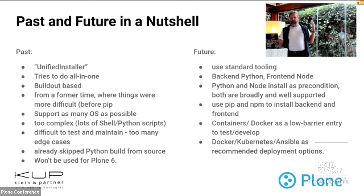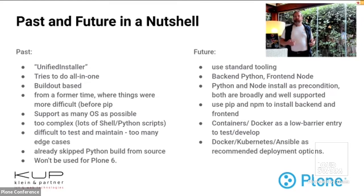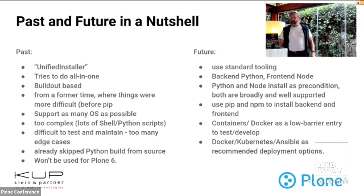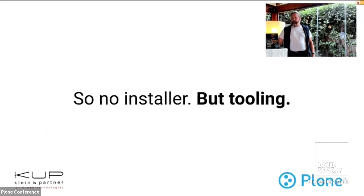We have the tooling for Python and we have the tooling for the Node/npm world. Python and Node can be seen as preconditions — you can install them on every system and both are broadly supported. So we use pip and npm in this environment to install our stuff. On top of that, if you like or want to be efficient, lower the barrier for entry, and make it easier to deploy your Plone site, you can use containers, Docker, Kubernetes, and similar tools to deploy your site.